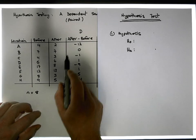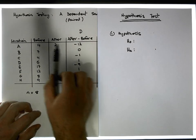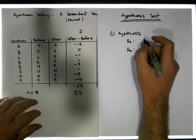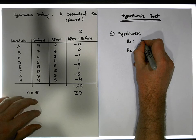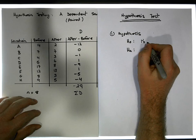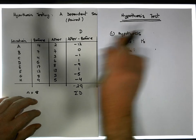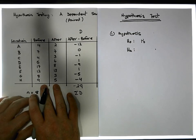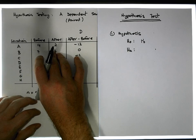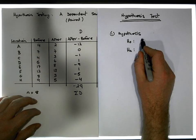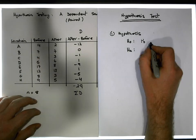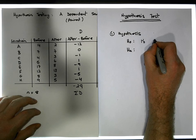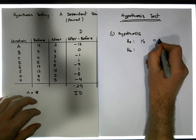The null hypothesis is going to be that there's no difference between the before and after measure. In other words, the null hypothesis is that μd — the population mean of the differences — is equal to zero.